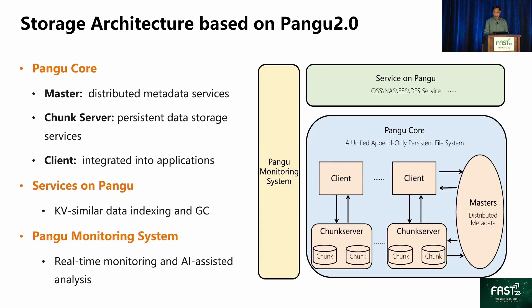This is an overview architecture of cloud storage based on second-generation Pangu. It can be divided into three parts: Pangu core, storage service, and monitor. Pangu core provides persistent file storage, and is made up of master, chunk server, and client. Storage service is built on top of Pangu core, and typically includes an LSM-tree storage engine providing indexing and compaction. Monitor is used to manage the whole system automatically, with AI-assisted methods always being used.